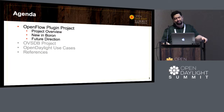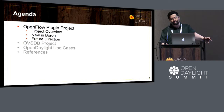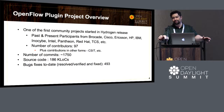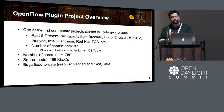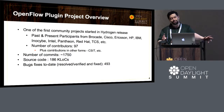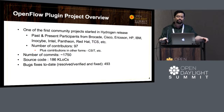The OpenFlow plugin project started in the Hydrogen release and was one of the first community projects, started between various vendors. Past and present contributors include people from Brocade, Cisco, Ericsson, HP — basically across the industry. We have had around 97 developers who have actually put in patches for the OpenFlow plugin project.